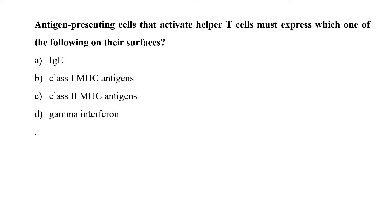Antigen-presenting cells that activate helper T cells must express which one of the following on their surfaces: IgE, class 1 MHC antigen, class 2 MHC antigens, or gamma-interferon. T helper cells or CD4 positive helper cells recognize and interact with the antigens which are bound to the class 2 MHC molecule present over the membrane. They also require additionally co-stimulatory signals which is produced by the APCs, which led to the activation of T helper cells. So basically class 2 MHC antigen bound receptor and co-stimulatory signal is required for the activation of helper T cells by the APCs.